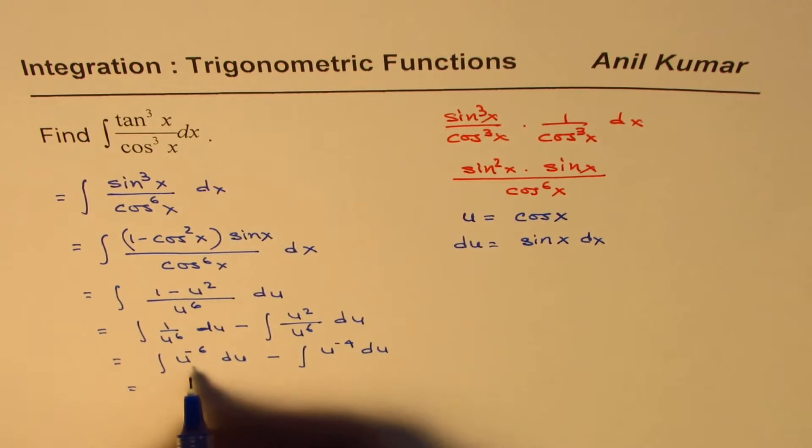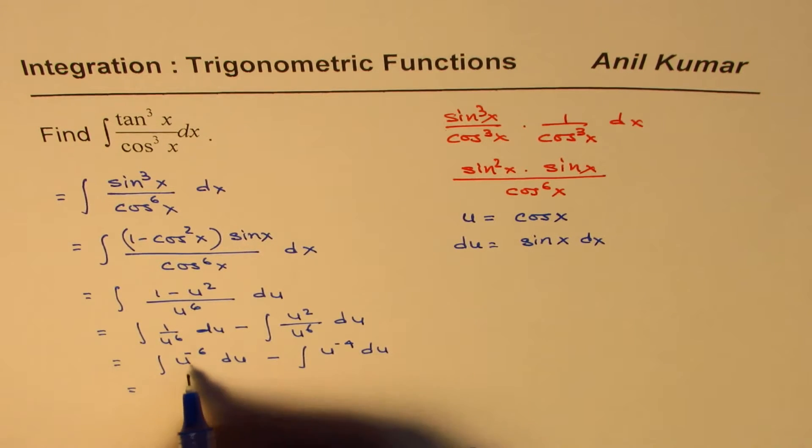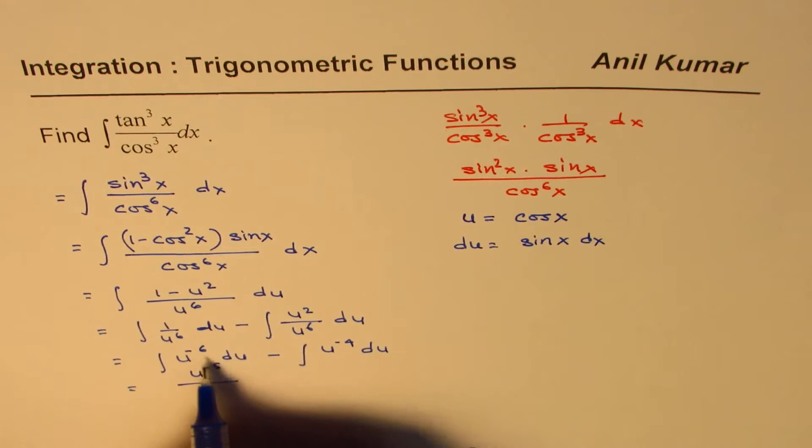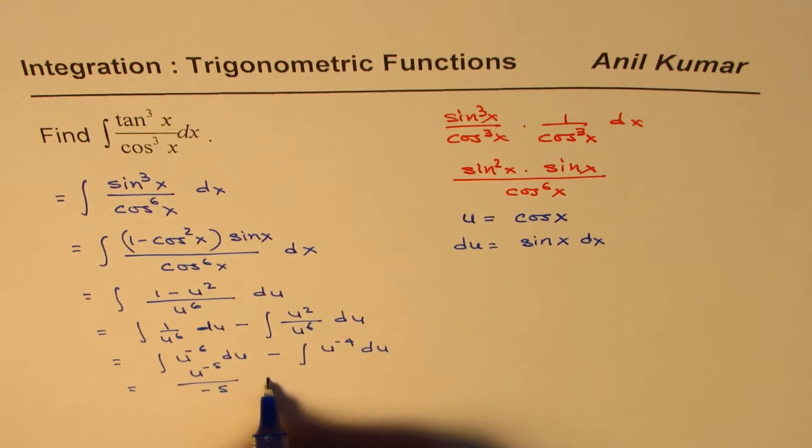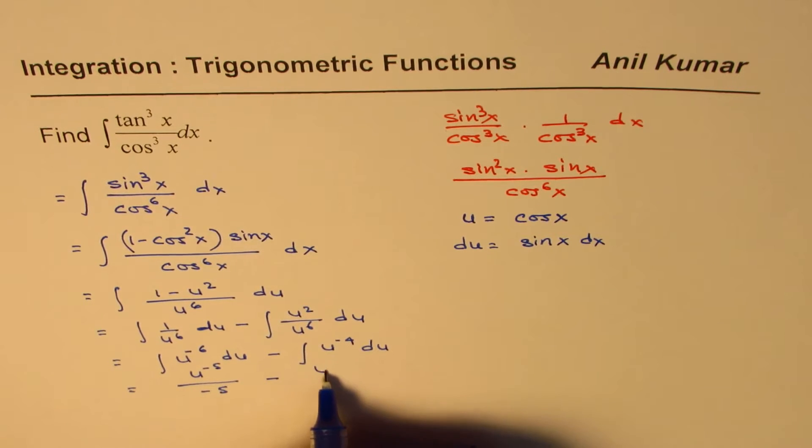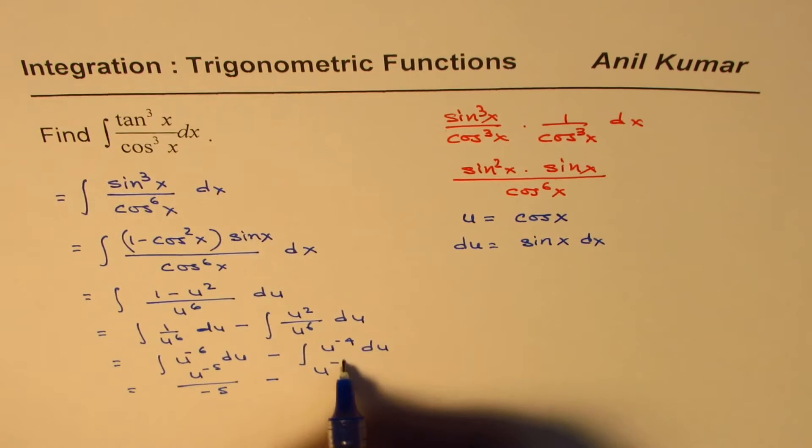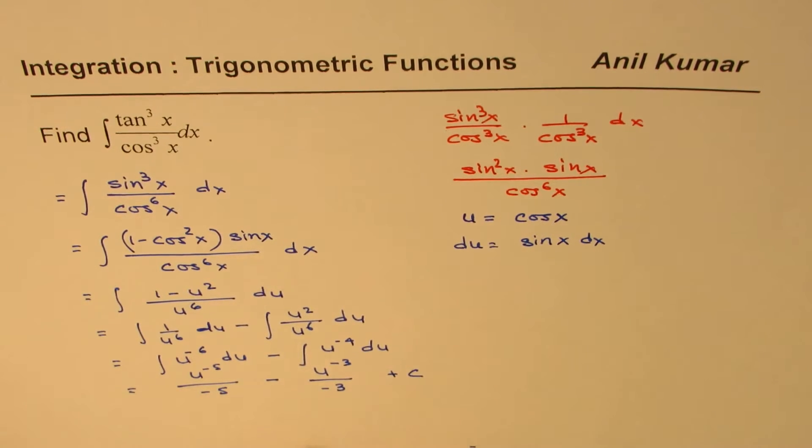So now applying the power rule, we get, we will add one, so we get u to the power of minus 5 divided by minus 5 minus u to the power of minus 3 divided by minus 3 plus c.